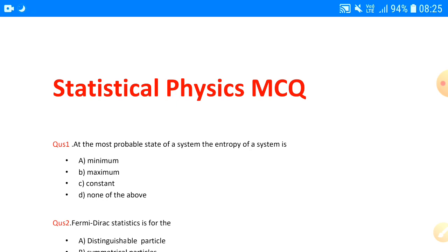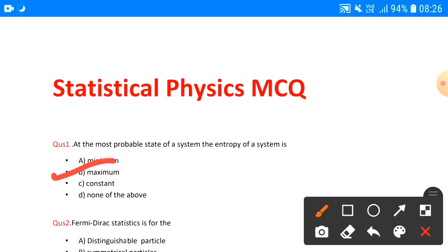Entropy — what is entropy? We all know it is the randomness of particles, how free the particles are to move around. So, we are talking about the most probable state, which is the equilibrium state. The answer to question number one will be B.